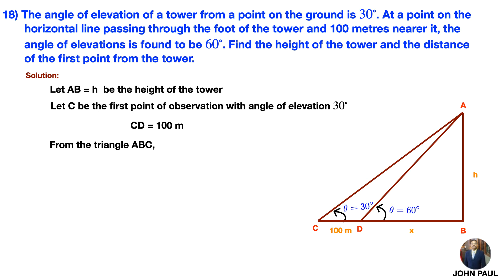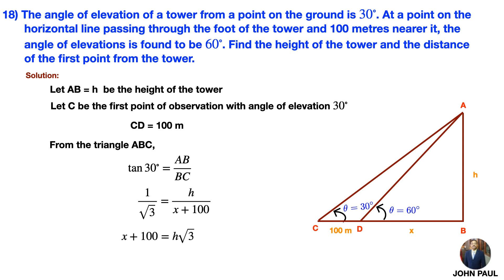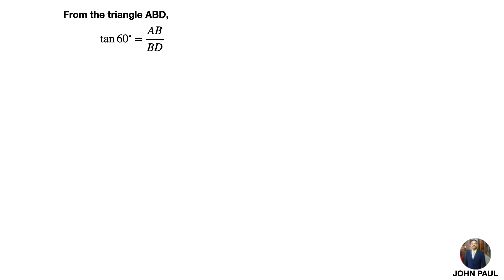From right angle triangle ABC with angle 30 degrees: tan 30° equals AB by BC, so 1 by root 3 equals H by (X plus 100). Cross multiplying, X plus 100 equals H root 3, giving X equals H root 3 minus 100. Keep this as equation 1. For triangle ABD with angle 60 degrees: tan 60° equals AB by BD, so root 3 equals H by X, giving X equals H by root 3. Keep this as equation 2.